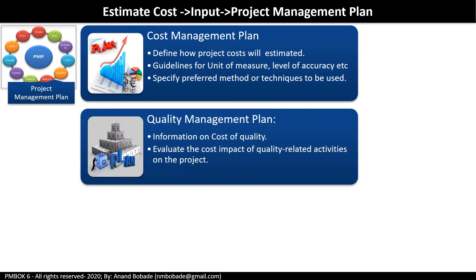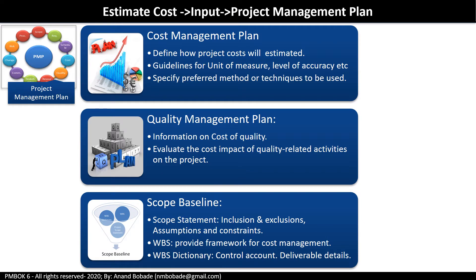The quality management plan provides information on the cost of quality. It is used to evaluate the cost impact of quality-related activities on the project. As a project manager, you need to ensure that all costs related to every quality-related activity are included in the estimation. The scope baseline contains the project scope statement, work breakdown structure, and WBS dictionary, which contains information about the work packages. The WBS dictionary will be updated with the cost estimate of each work package during this process.